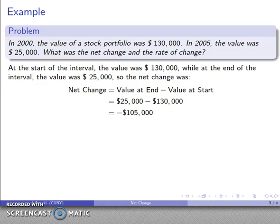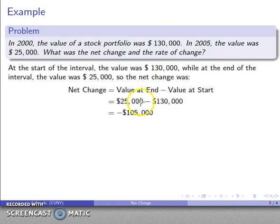That's going to be a negative number: negative $105,000. This value is in dollars, and that value is in dollars. Units are like algebraic variables — if I had 25,000x minus 130,000x, these are like terms, so I get the difference of the coefficients and the variable stays the same. So the units of the net change are also dollars. The negative sign tells us the net change corresponded to a decrease in value, from $130,000 down to $25,000 at the end of the interval.